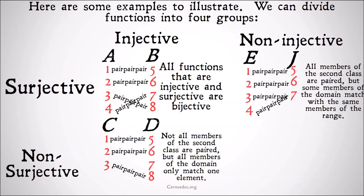Non-injective and surjective functions have the opposite situation, where all members of the second class are paired, but some members of the domain match with the same members of the range. Surjective functions are those where all members of the range can match with one or more members of the domain. Non-injective versions have at least one member of the range that matches with multiple members of the domain — in this case, seven matches with three and four.